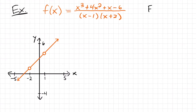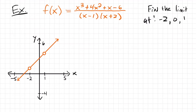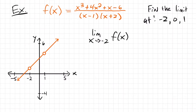We want to look at the limit at a few points on this graph and compare them to the actual values of this function. We're going to find the limit at a few different points — negative 2, 0, and 1. And for all three of these, we're going to be looking at both sides of the graph. I'm going to write the limit as x approaches negative 2 for this function, and to save some space, I'm just going to write f of x.